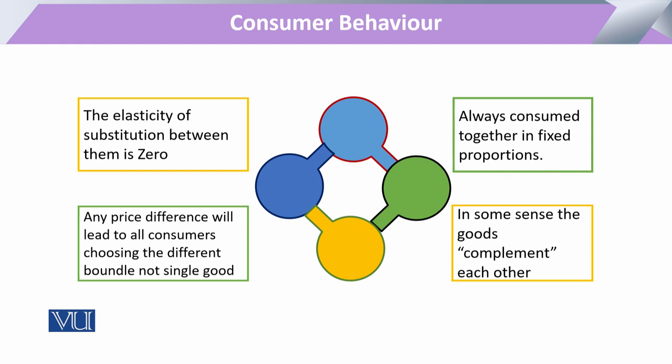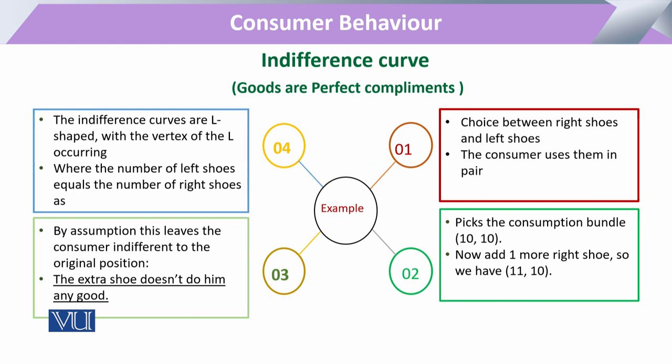If the price of one good increases, we have to decrease the total bundle, not only one good. For example, if anyone has to increase just the right shoes, to complete the total pair he or she has to also purchase the corresponding left shoe. So complements always go in the same proportion. Keeping this in view, the utility derived from the combination of these two goods is possible only at the vertex where both are combined, and the indifference curve moves only along the vertex.